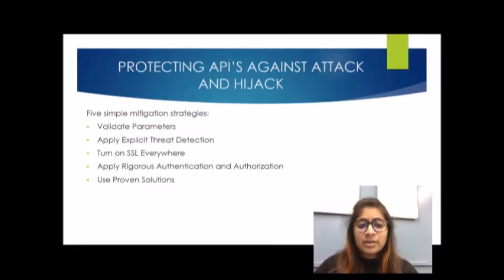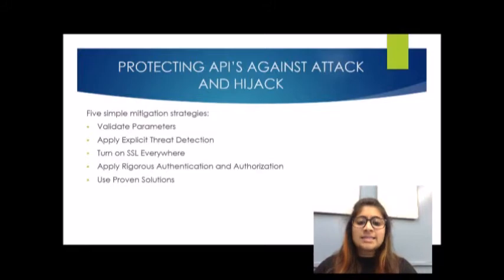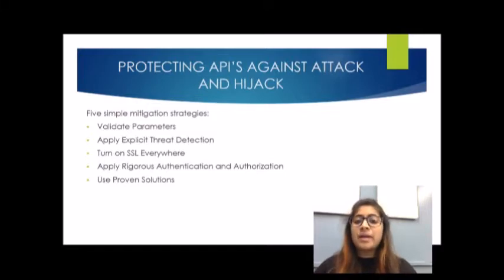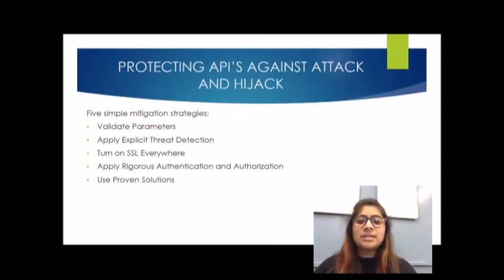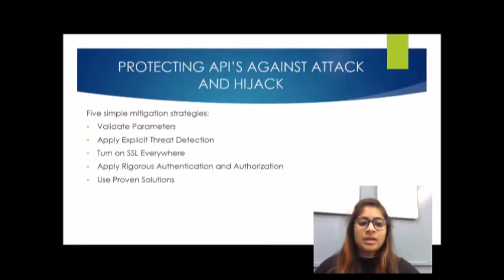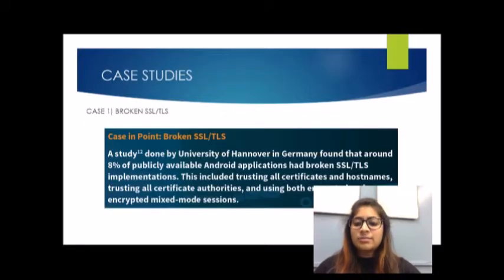Last but not least, the fifth strategy is to use proven solutions. The first rule of security is do not invent your own. There is no reason to create your own API security framework, as excellent solutions already exist. The best way to secure your API from any type of intrusion is to separate API implementation and API security into distinct layers or tiers. Protection should be in place to avoid attacks.